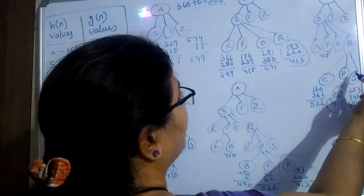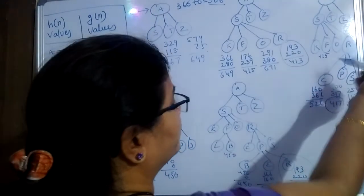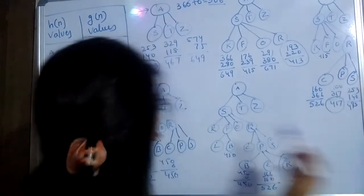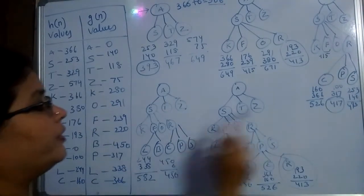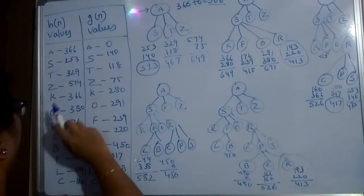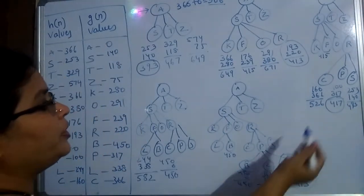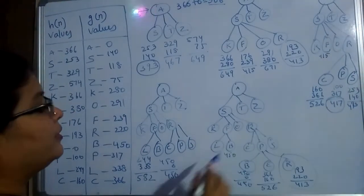So I expanded R here. What are the next things regarding R? At the R, C, P, S. So what is the C? 160, 366. And P, 100, 317. And S, 253, 140, that is 493. Which one is minimum again in this level? 417, so that is P.